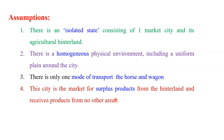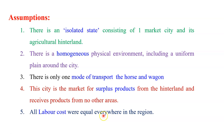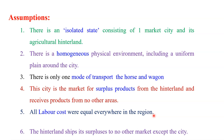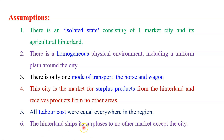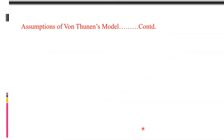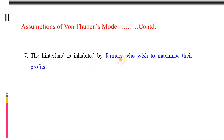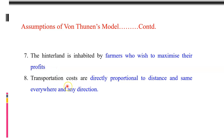Otherwise, this model will not be applicable. The next assumption: all labour costs are equal everywhere in the region — inside that isolated state, the labour cost should be equal everywhere. The next assumption: the hinterland is inhabited by farmers who wish to maximize their profit, because each and every farmer tries to maximize profit through agricultural activity and production. Transportation costs are directly proportional to distance and equal in every direction.